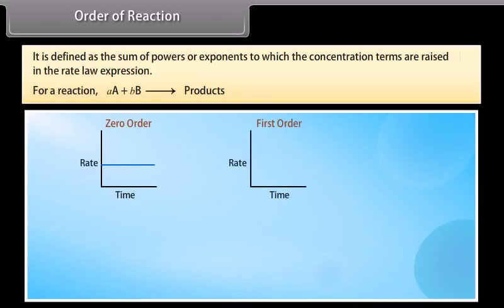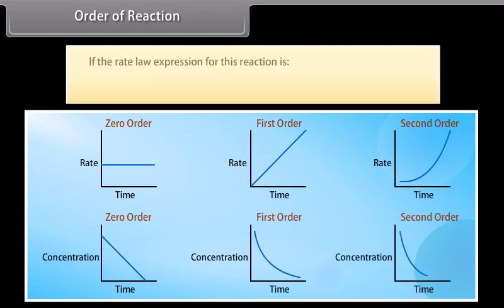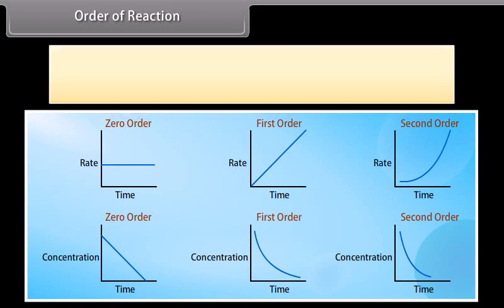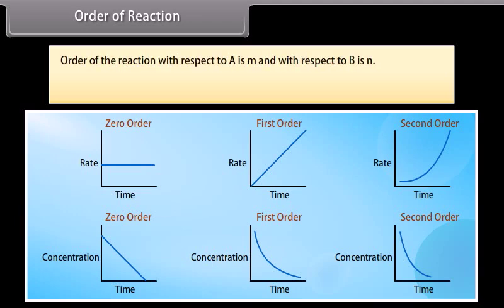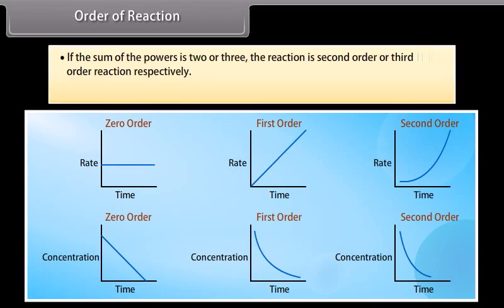Order of reaction is defined as the sum of powers or exponents to which the concentration terms are raised in the rate law expression. For a rate law: Rate = K[A]^m[B]^n, the order of this reaction equals m plus n. Order with respect to A is m and with respect to B is n. If the sum of the powers equals 1, the reaction is called first order; if 2 or 3, it is second or third order respectively. The order of a reaction can also be zero or fractional.